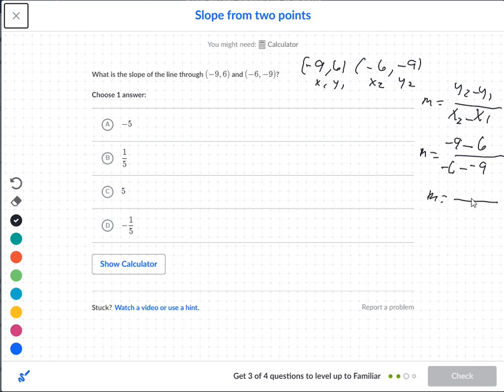So, on top, negative 9 minus 6 is a negative 15. On the bottom, I get negative 6. The double negatives turn into a positive. So, I get negative 15 over 3, divide negative 15 by 3, and I get a negative 5.